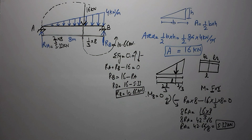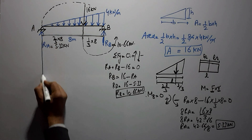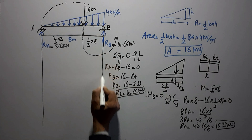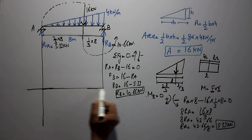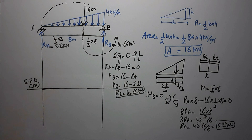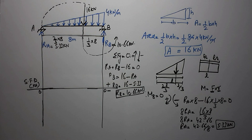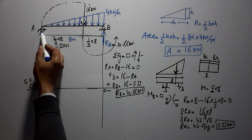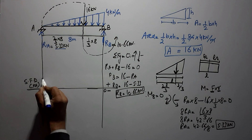Now that we have the support reactions, we can draw the shear force diagram. We draw a horizontal reference line — values above the line are positive and values below are negative. Starting from the left support A, the reaction RA = 5.33 kN acts upward, so we plot +5.33 kN above the reference line.